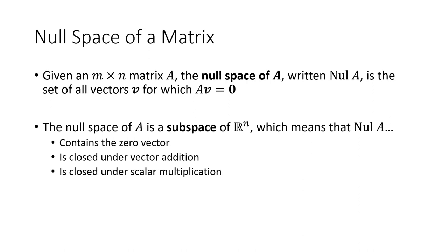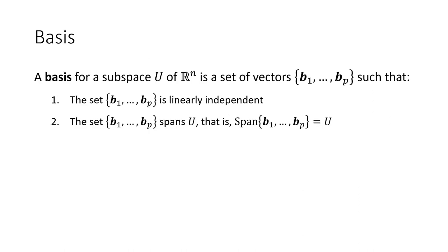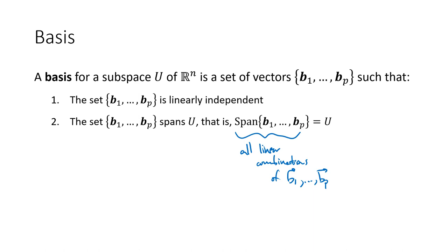What we're going to look for is a special set associated with that null space. A basis for a subspace is a set of vectors with two properties: the vectors must be linearly independent, and the set has to span the subspace U — meaning the set of all linear combinations of those vectors B1 through Bp equals the subspace U. In this lecture we'll talk about how to find a basis for a null space.